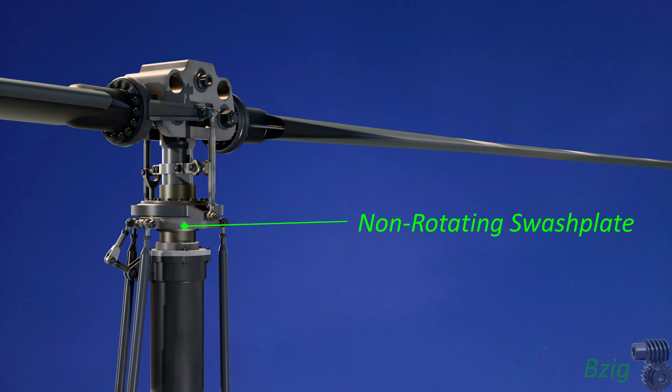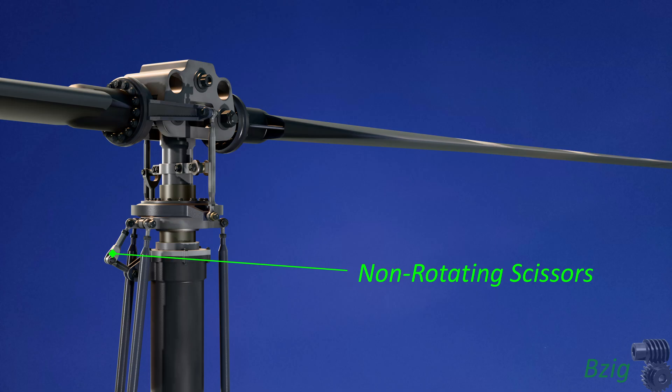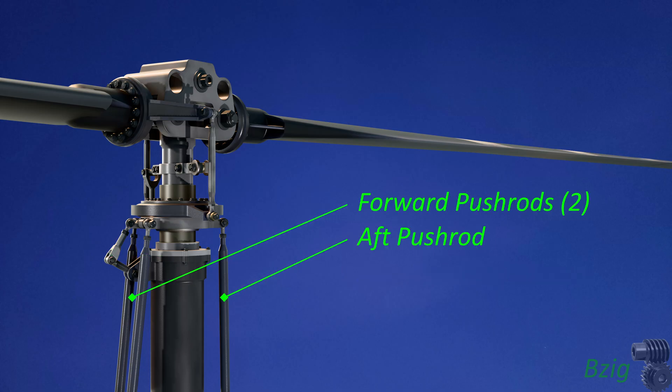the non-rotating swash plate, the non-rotating scissors, and the three push rods that connect the non-rotating swash plate to the lower flight controls. These three push rods control the tilt and heave of the non-rotating swash plate in order to pass three types of control inputs to the rotating swash plate and then the blades.